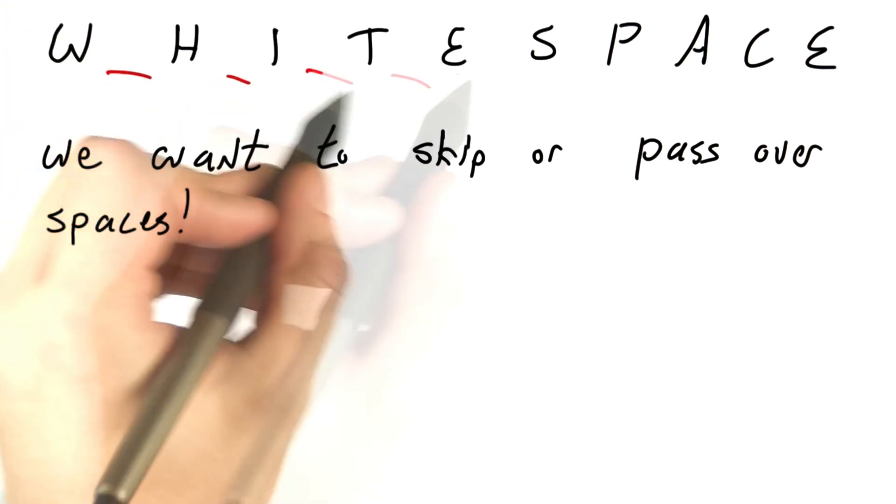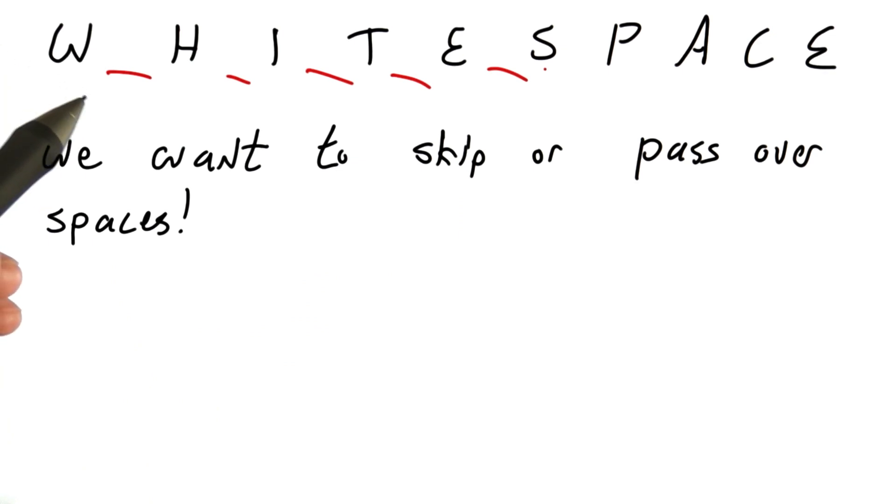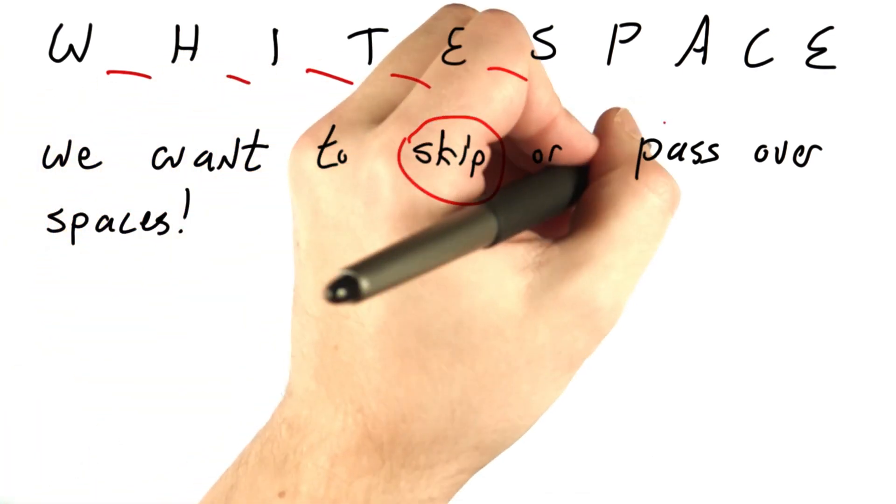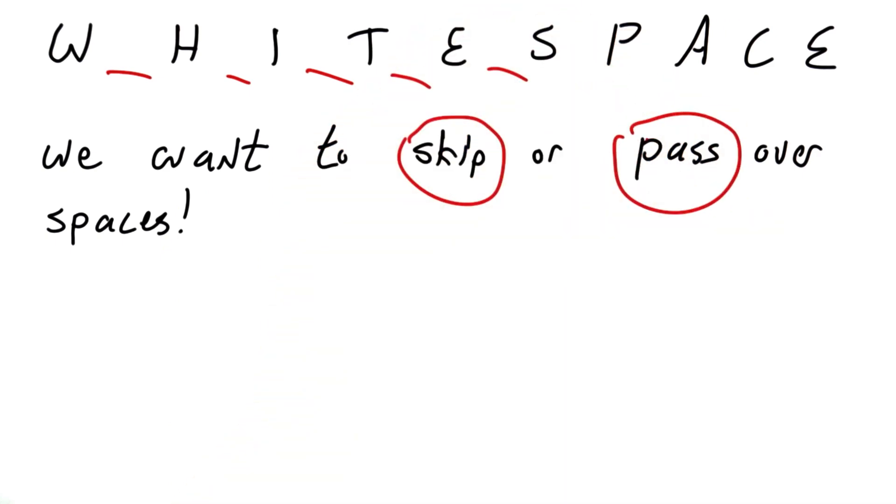As we've seen before, there can be lots of extra space between various tokens. We really want to skip or pass over spaces, and possibly new line characters and tabs. More on that later.